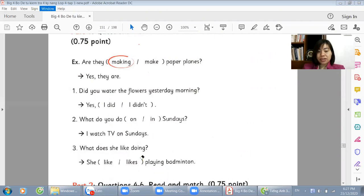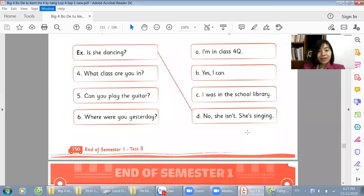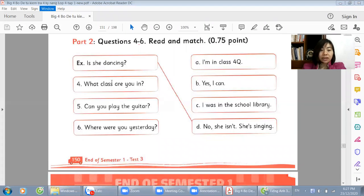Good job. Move to the next part. Read and match. Now first. What class are you in? This is a question about class. We will answer easily. Answer A. Can you play the guitar? Asking about ability. So the question starts with 'can', but the answer will definitely have 'can' too.